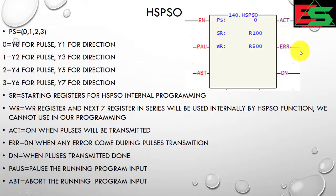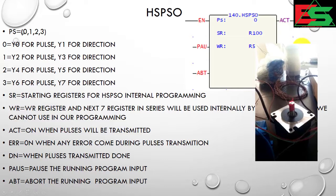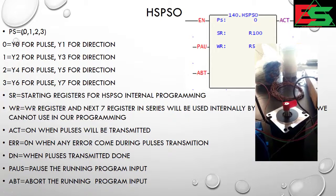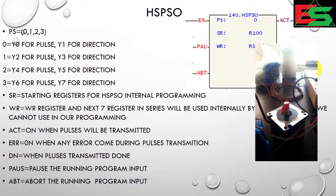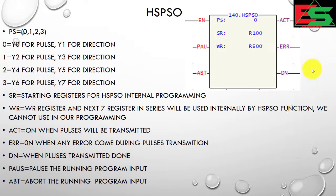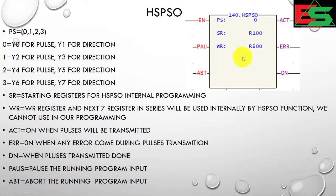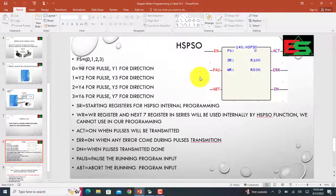The error output turns on when any error occurs during pulse transmission. The DND (done) bit turns on when your pulse programming is completed. There is also a POU (pause) input and an abort input. If you want to pause your programming, you give an input to this module and your program will stop. The abort signal will terminate the operation.